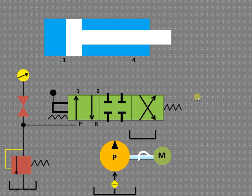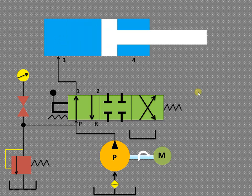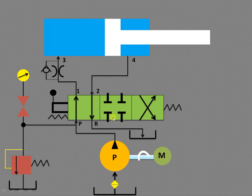Let us understand the forward motion of the piston through animation. Liquid from the reservoir is pumped by the pump, then enters port P. From port P it goes to port 1, from port 1 it enters port 3, and the fluid acts on the piston surface causing it to move in the forward direction. The liquid from the rod end enters from port 4 to port 2, and from port 2 to R — back to the reservoir.